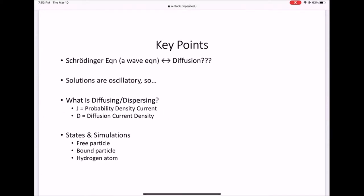Section 9.4 covers the diffusion and Schrödinger equations. But the Schrödinger equation is a wave equation — it's not a diffusion equation. So the question is, how can these two concepts be connected? The solutions to the Schrödinger equation are oscillatory, so the natural question is: what is diffusing or dispersing? The answer is the probability of a particle being in a particular location at a particular time. I'm going to go through the math of all the key points, and then share some simulations that'll explain this topic more clearly.